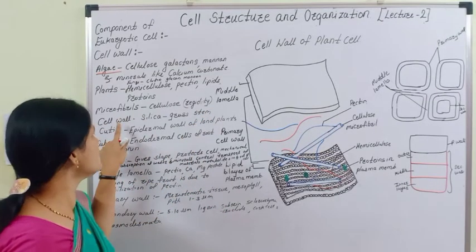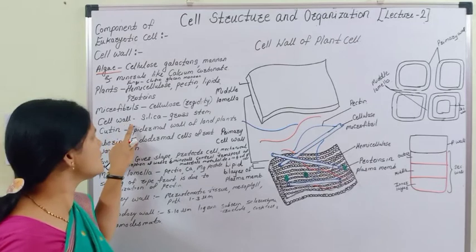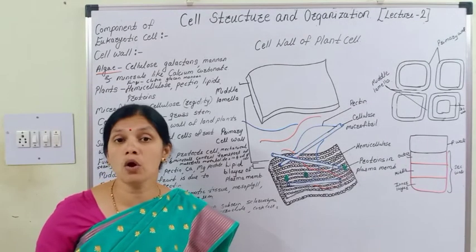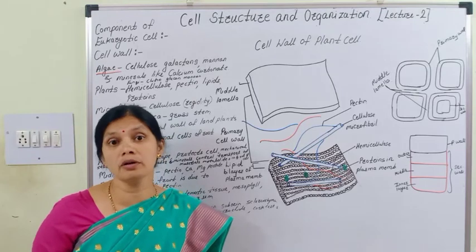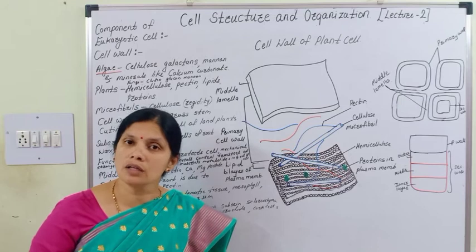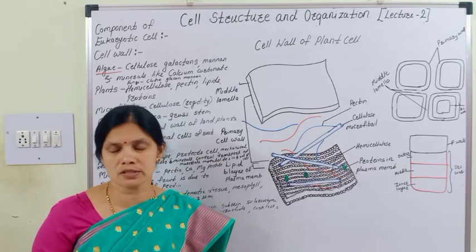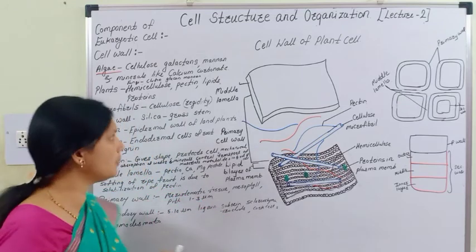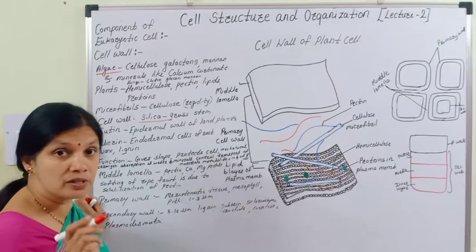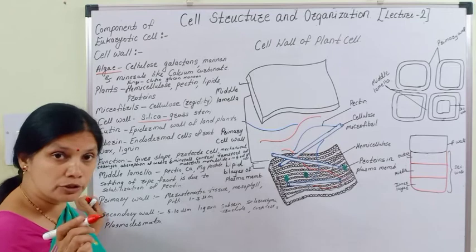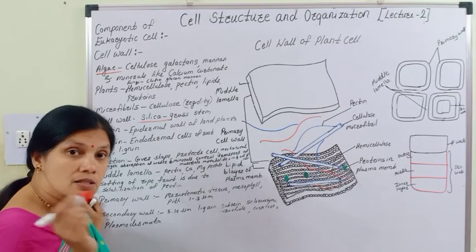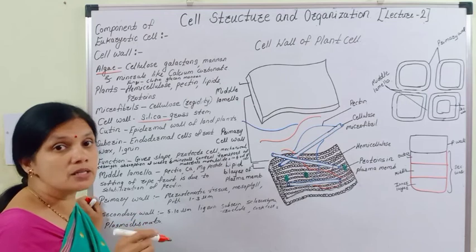Along with these components, there is also a deposition of other compounds in the cell wall. For example, there is a deposition of silica — silicate deposition — in the plant cell wall.